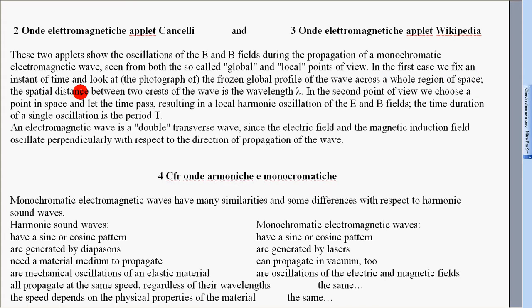The special distance between two crests of the wave is the wavelength λ. In the second point of view we choose a point in space and let the time pass, resulting in a local harmonic oscillation of the E and B fields. The time duration of a single oscillation is the period T.